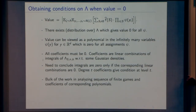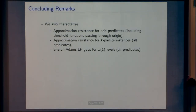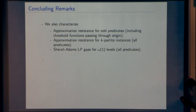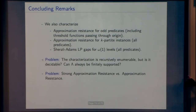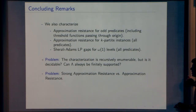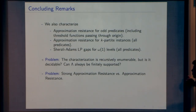We also characterize approximation resistance, because strong approximation resistance is equivalent to approximation resistance for odd predicates. We characterize approximation resistance including threshold predicates, which pass through the origin because they're odd. We also get a characterization of k-partite instances for odd or even predicates, and characterizations of Sherali-Adams LP gaps. The open problems are: first, is this condition decidable? It is recursively enumerable like Prasad and Steurer's condition, but decidability is unknown. Second, can you show that lambda is always finitely supported? Known results use one point, but we have no bound on the support size. Third, can you find predicates which are approximation-resistant but not strongly approximation-resistant, or vice versa?